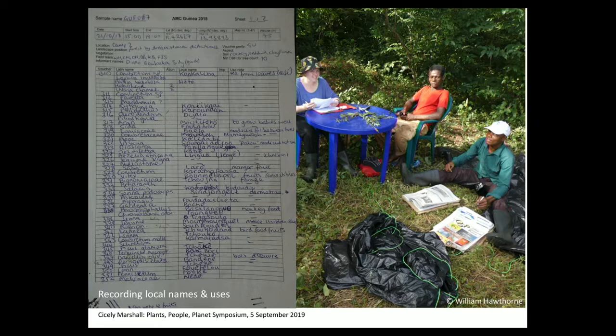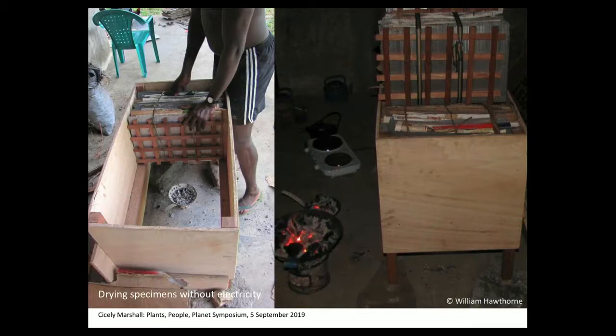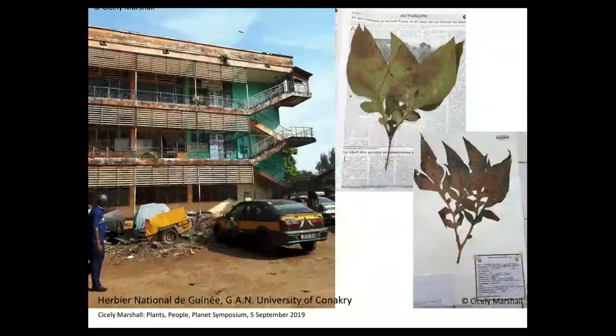Specimens have to be dried, and without electricity that means using charcoal or gas. Assuming you don't accidentally burn all your specimens, you end up with — in this case — 2,000 specimens that need identifying. We identify species with reference to the herbarium in Conakry and also online resources; all the type specimens of African plants are now online.